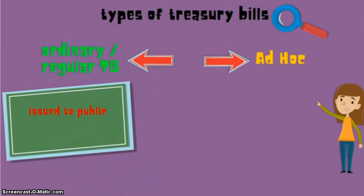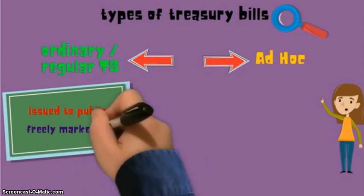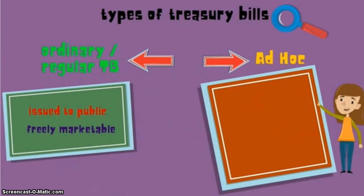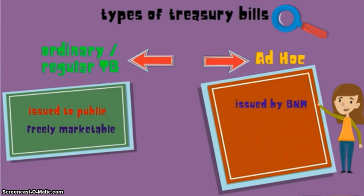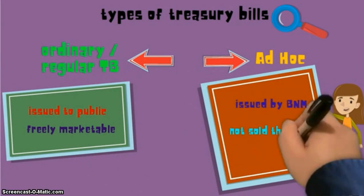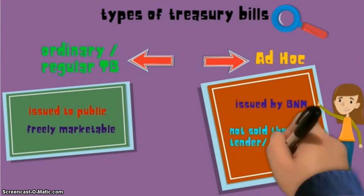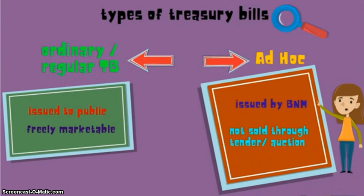For ordinary, it is issued to the public and freely marketable. For ad hoc, it is issued by BNM and not issued through tender or auction.